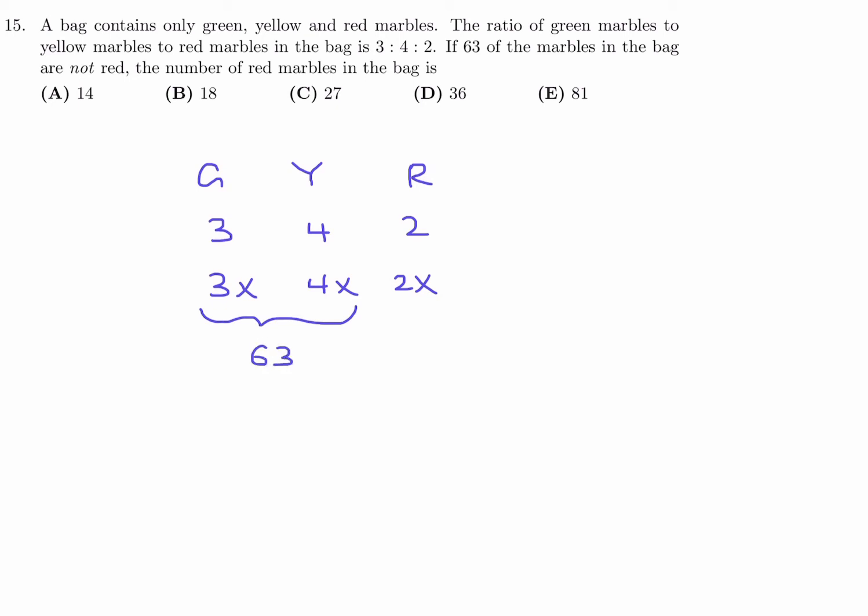So that basically means that 3x plus 4x is equal to 63. 7x is 63, and therefore x is 9. So that means 2x is 2 times 9, and that is 18. 18 red marbles in the bag. Number 15, that is B.